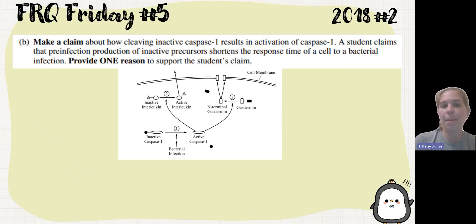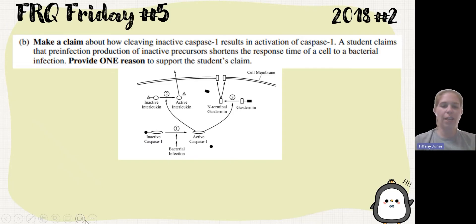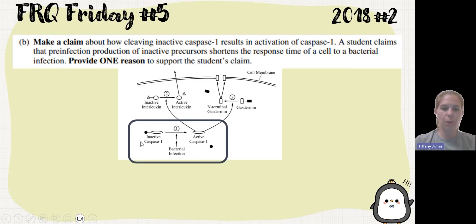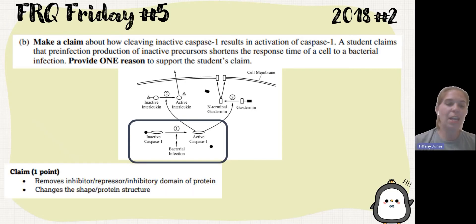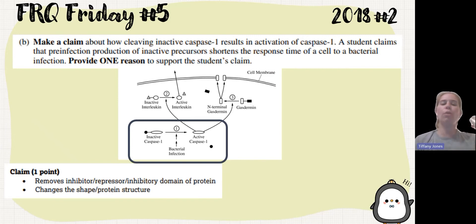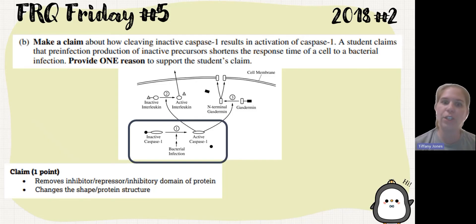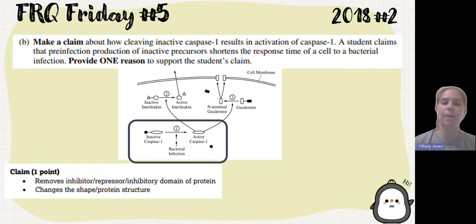Part B asks you to make a claim about how cleaving inactive caspase 1 results in the activation of caspase 1. Looking at the diagram, inactive caspase 1 has a little black dot representing an inhibitory region, but active caspase 1 does not. So removing this inhibitory region allows it to be active and changes the shape. Anytime you bind something to a protein, it always changes shape — I tell my students that constantly.